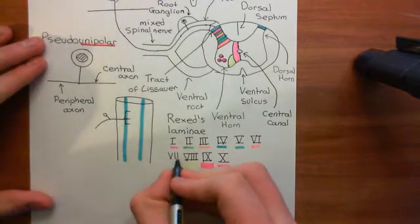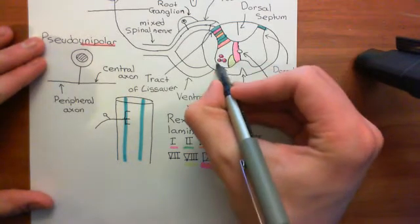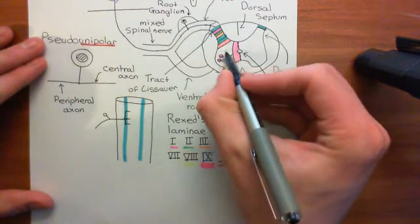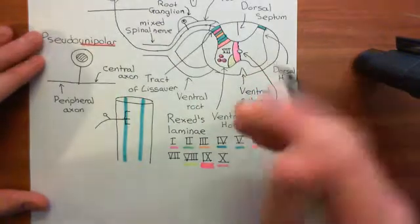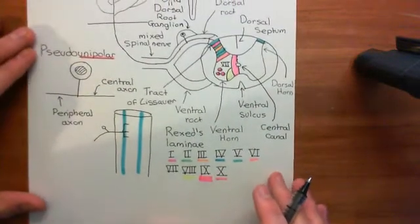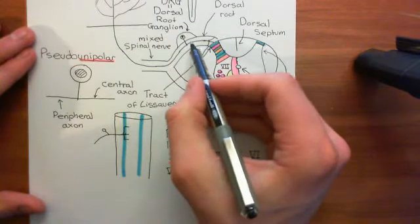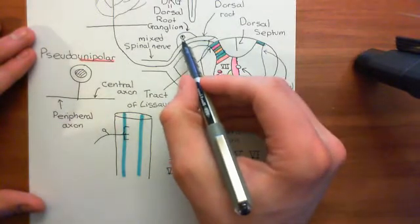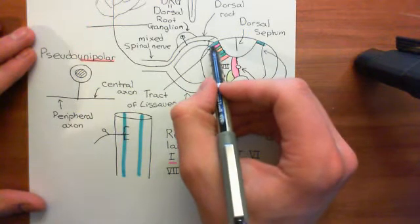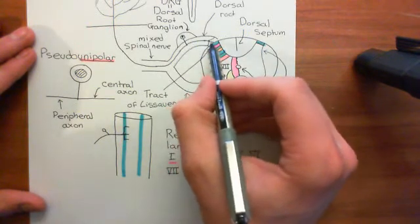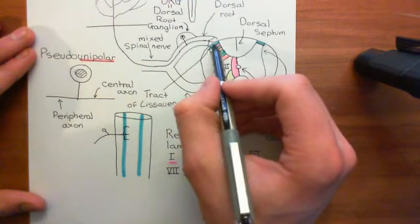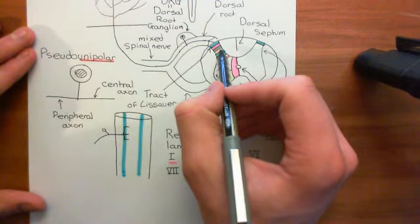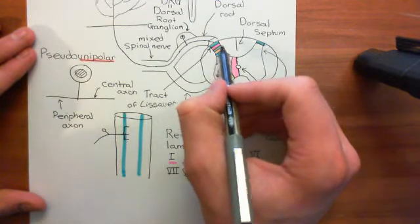Finally, everything that is left is then considered Rexed lamina 7. All of this white bit is Rexed lamina 7. We now want to discuss where the central axon of the peripheral nociceptor is actually going to come into. We know that the central axon will divide into many different branches, and these will go up and down in the tract of Lissauer, and then they'll enter the dorsal horn of the spinal cord at different levels.